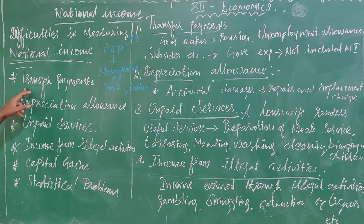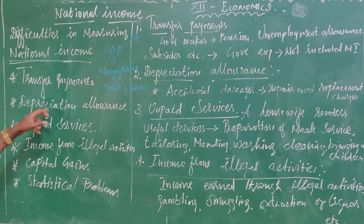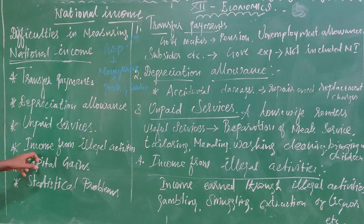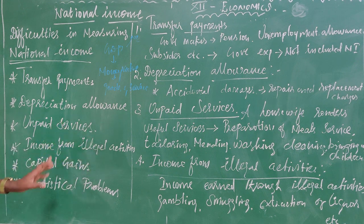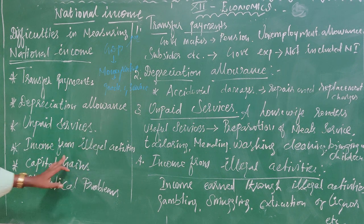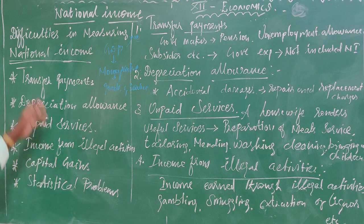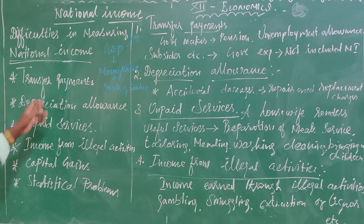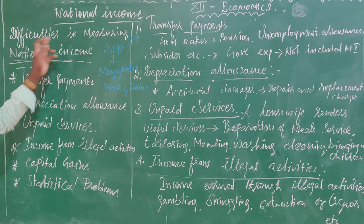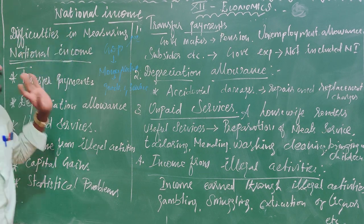First: transfer payments. Second: depreciation allowance. Third: unpaid services. Fourth: income from illegal activities. Fifth: capital gains. Sixth: statistical problem. There are six types of difficulties in measuring national income.